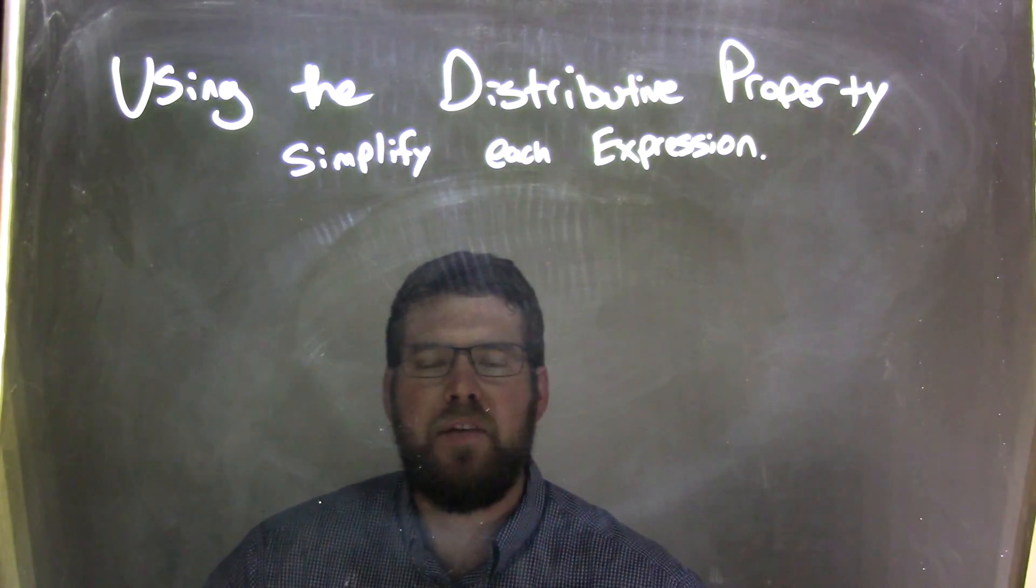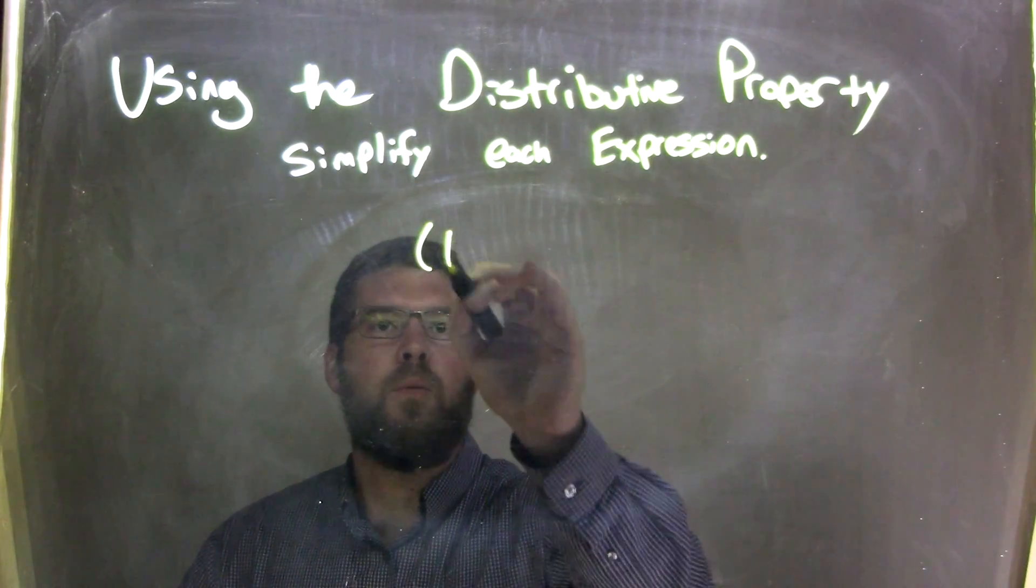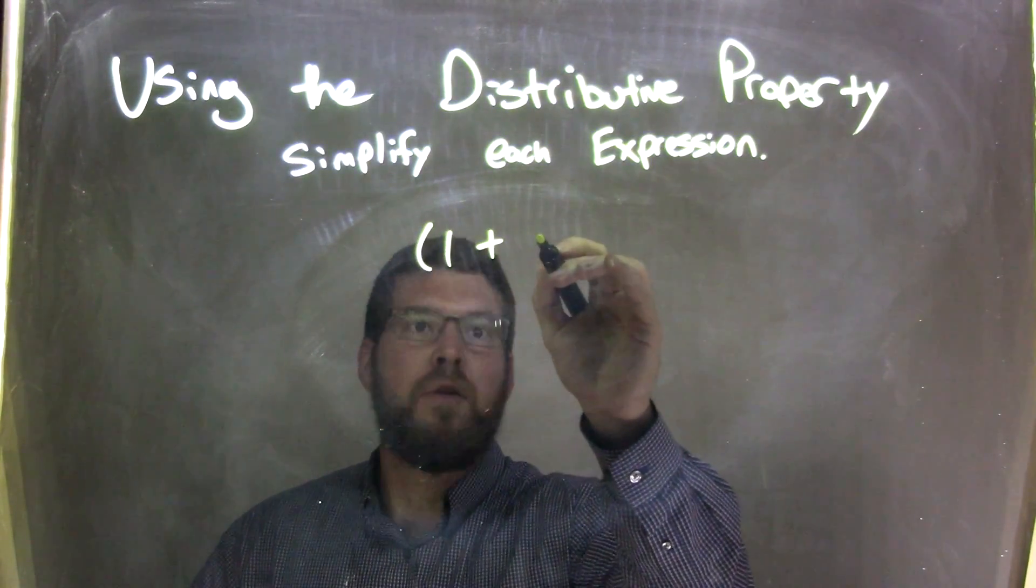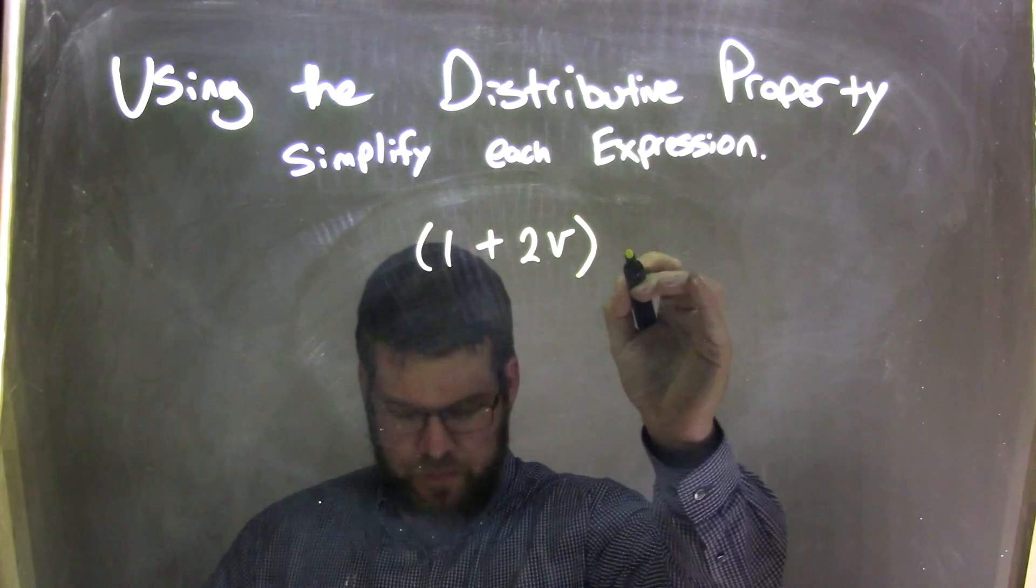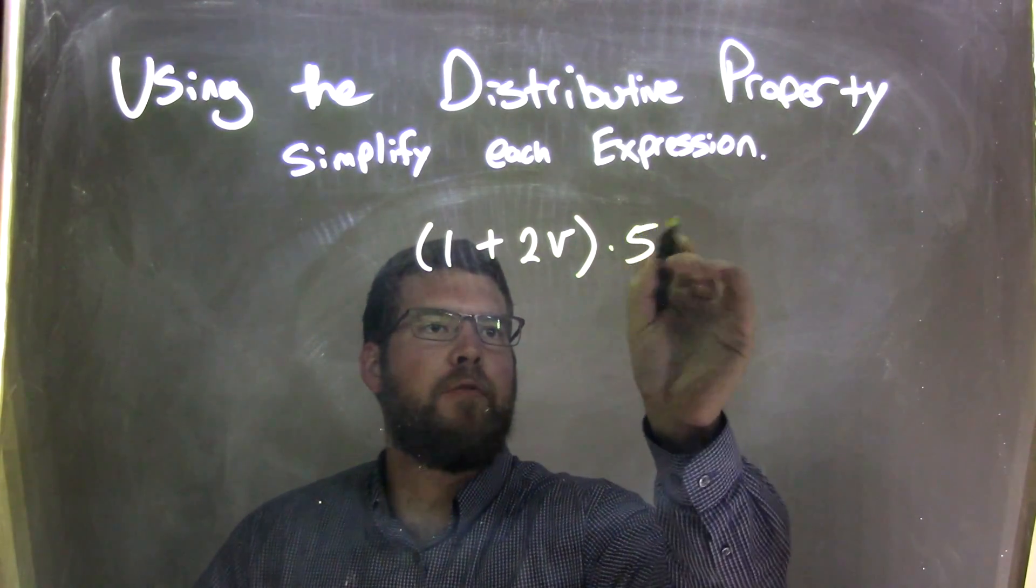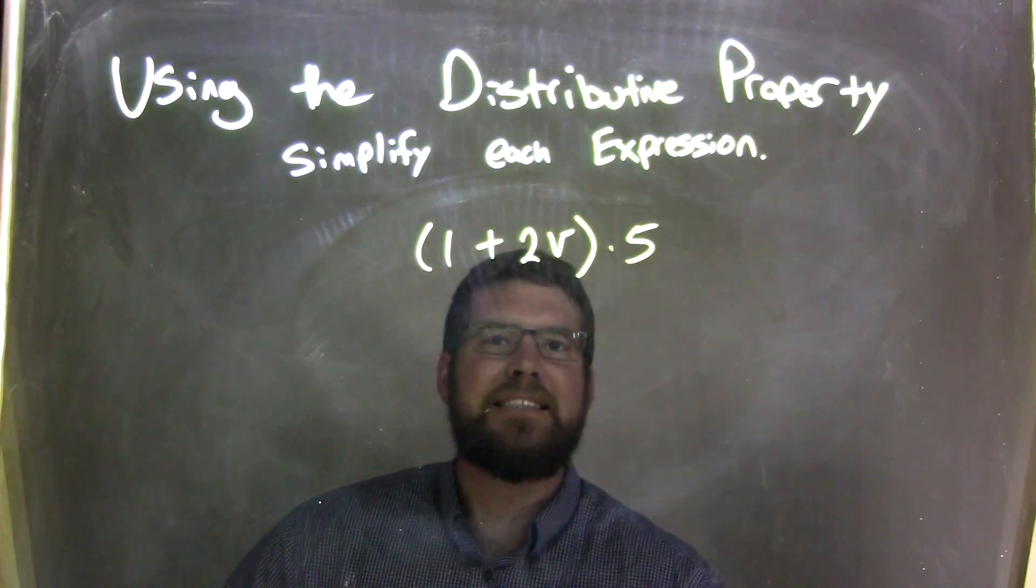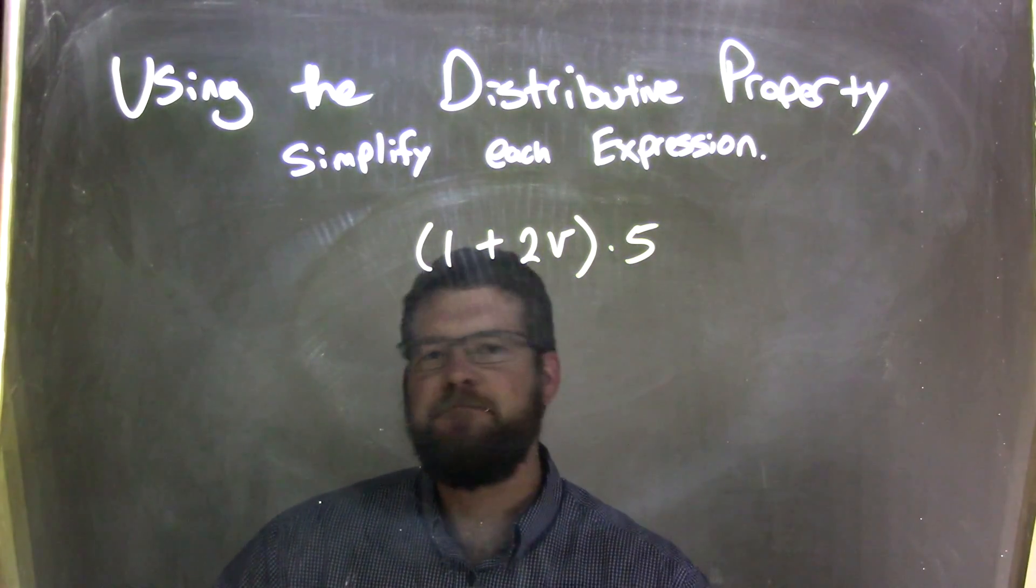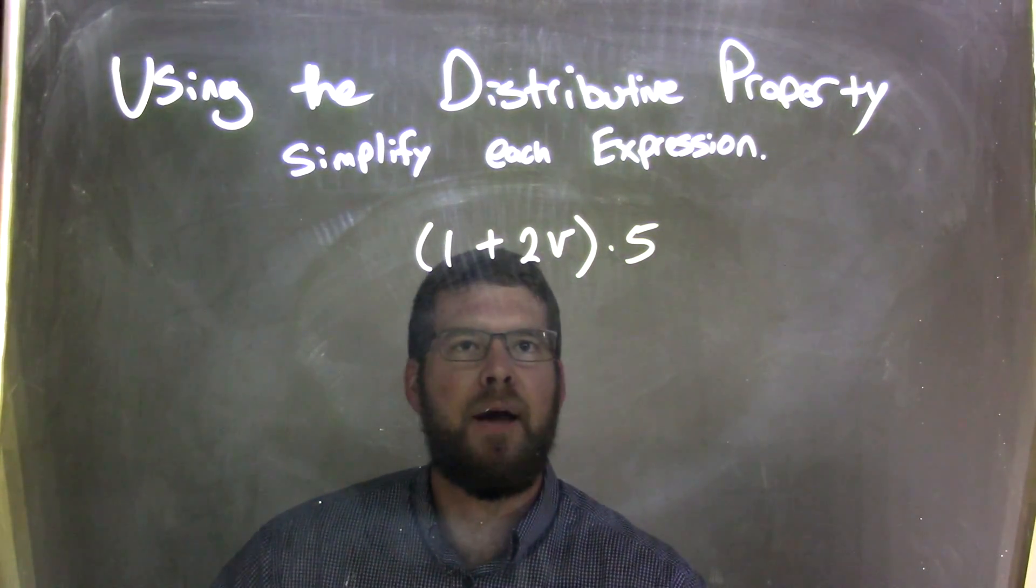If I was given this expression, 1 plus 2V times 5, so 1 plus 2V times 5. 1 plus 2V, not like terms, they're in parentheses, but we cannot combine them.